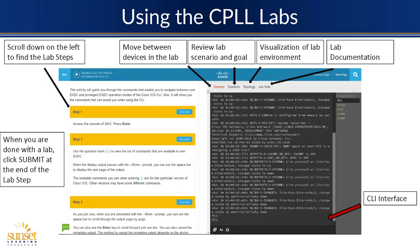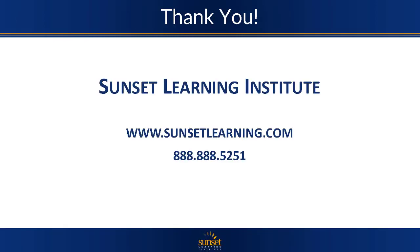Once you get into a lab, on the right-hand side you've got your CLI or GUI interface, depending on which course you're in. You've got a couple of tabs on the top for changing between different devices and looking at the overall scenario. The lab topology lets you see the visualization of what devices you're working on. On the left-hand side you've got your lab steps — step one, do this; step two, do this. If you want a detailed walkthrough, you can click that show me button and it shows you an example of doing that step, which is very helpful especially if it's something you've never configured before. Hopefully this has been helpful and we look forward to seeing you in class.